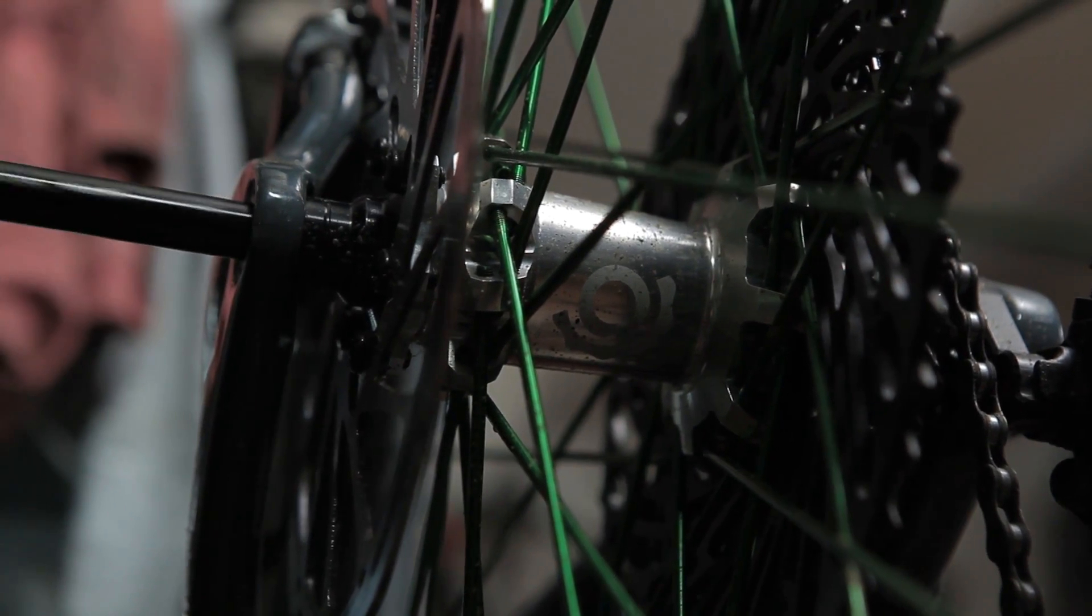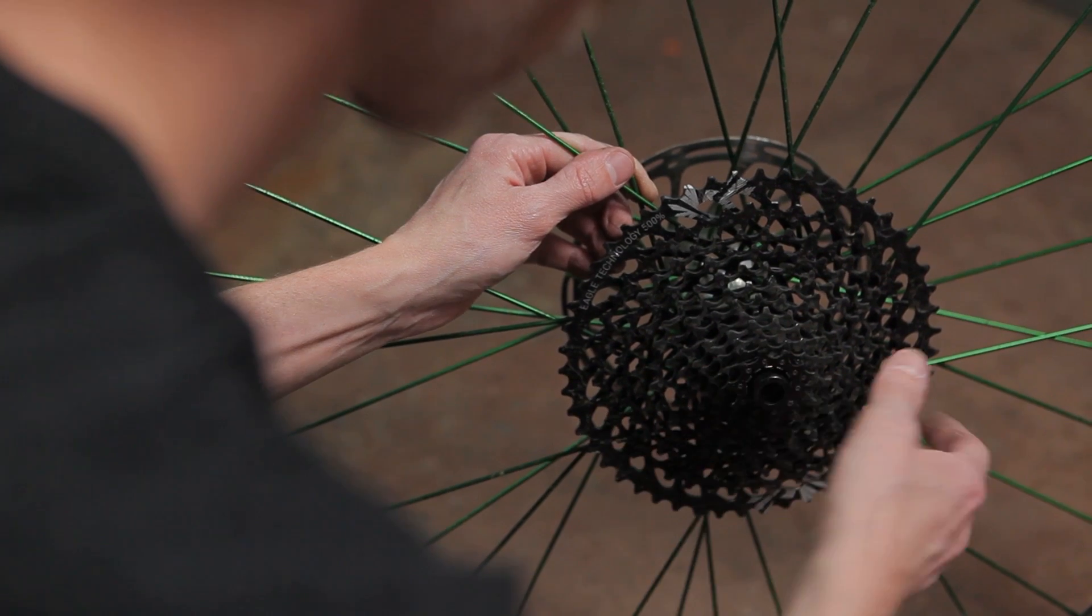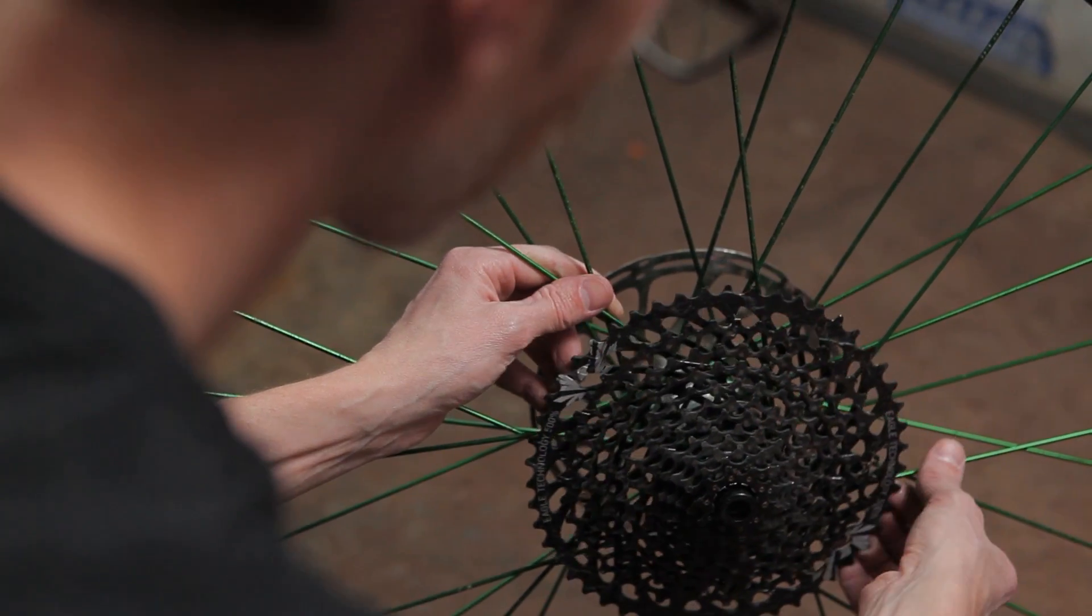Once you have the wheel off, you're ready to get started. For basic maintenance, you don't even need to remove the cassette.